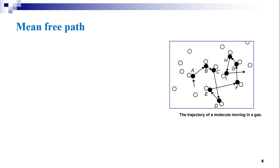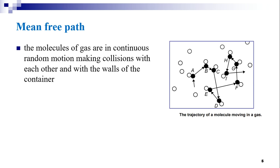Now we shall discuss about mean free path. We may recall that in elementary kinetic theory, gas molecules are considered as point masses and intermolecular collisions are ignored. Clausius assigned a finite size to a gas molecule. As it is assumed that the molecules of a gas are in continuous random motion making collisions with each other and also with the walls of the container, a molecule undergoes frequent changes in its direction of motion. This results in a series of zigzag paths, which are called free paths.